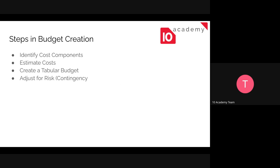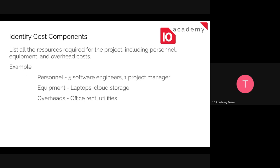The steps to create a budget for a project are: first, identifying cost components; second, estimating costs; third, creating a tabular budget so it will be clear for anyone reviewing it; and fourth, adjusting for risks and contingencies.